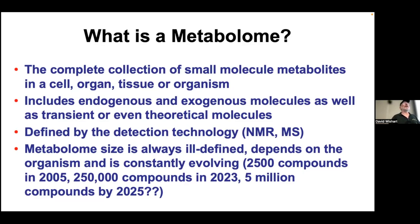The metabolome is defined by the technology. Sensitive techniques like mass spectrometry view the metabolome as very large; less sensitive techniques like NMR view it as somewhat smaller. The metabolome is always ill-defined and depends on the organism — it changes tremendously between plants, microbes, and humans. The first edition of the Human Metabolome Database had 2,500 compounds in 2005. It now has 250,000 compounds, and in a couple of years it's expected to grow to about 5 or 10 million compounds, growing rapidly as we use tools like machine learning.